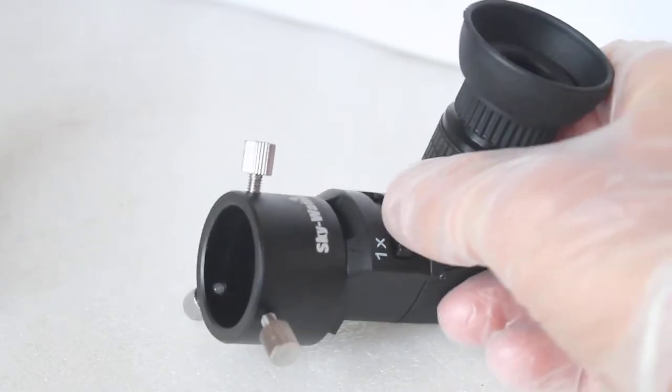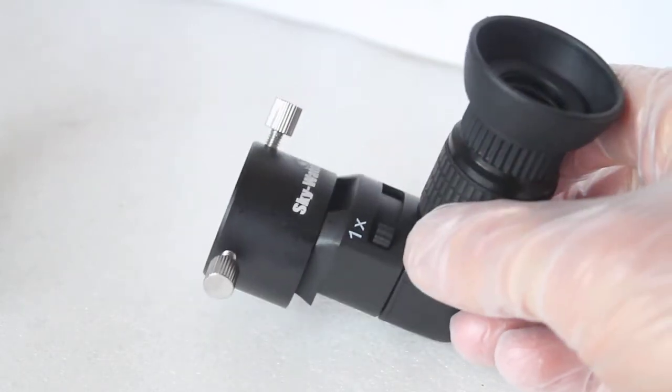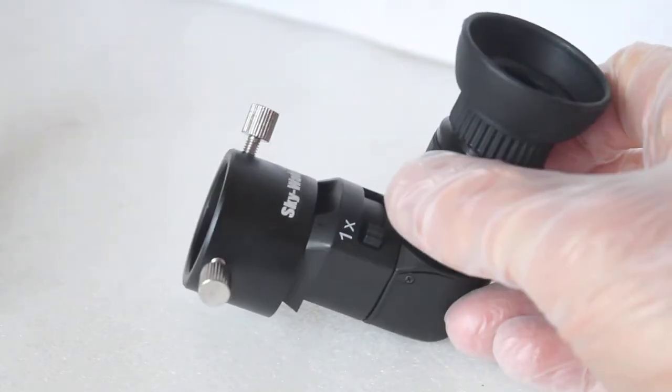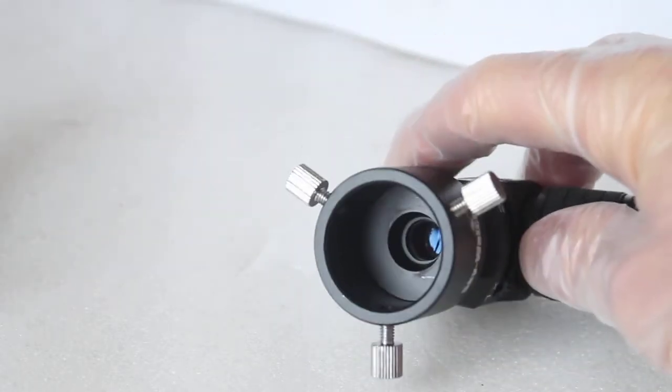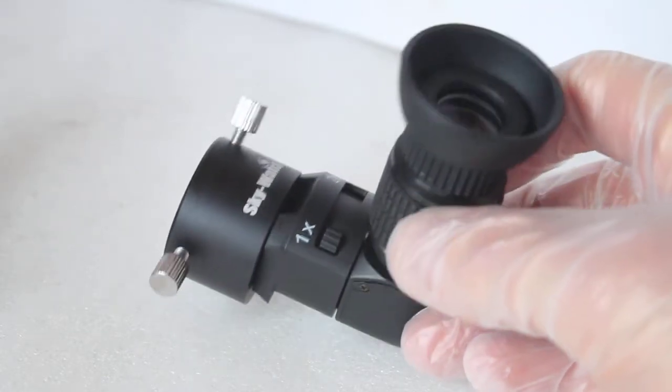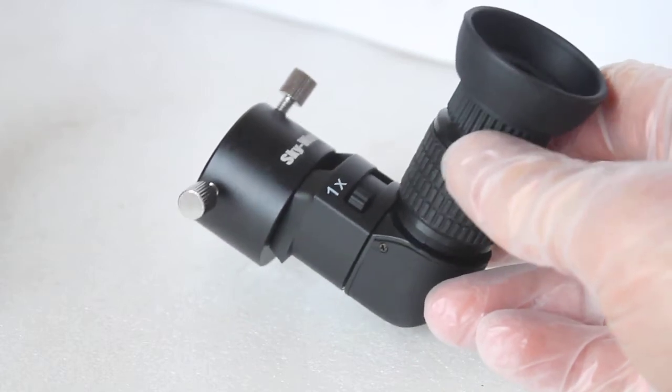You'll notice it has three grub screws. I have noticed that some lesser brands only have one, so it's very important if you want a secure fit. Also, the opening here is 30.1 millimeters, not 0.1, very important because I've seen some reports from other lesser branded polar scopes that it's not actually quite wide enough to fit on some polar scopes.